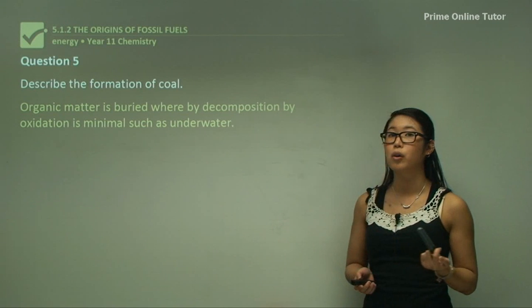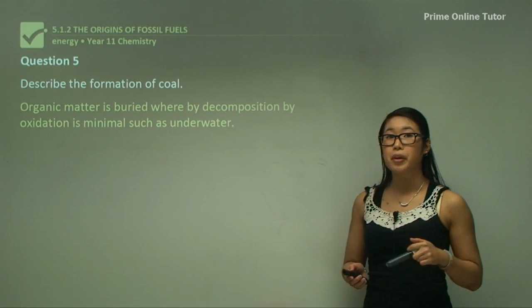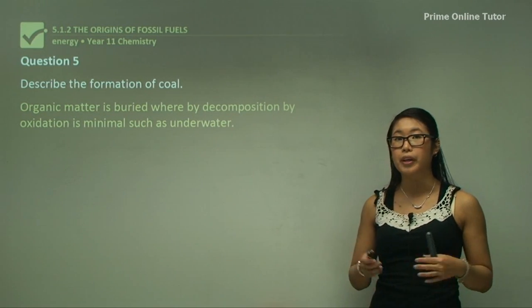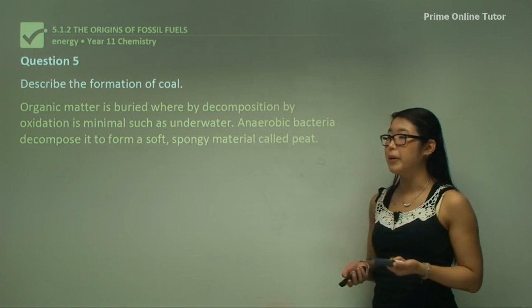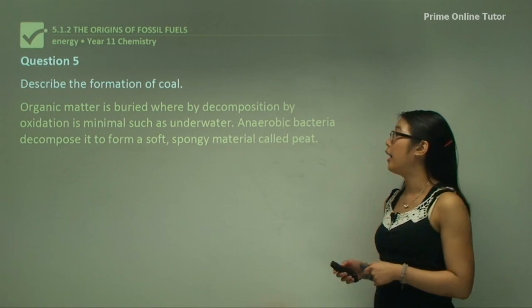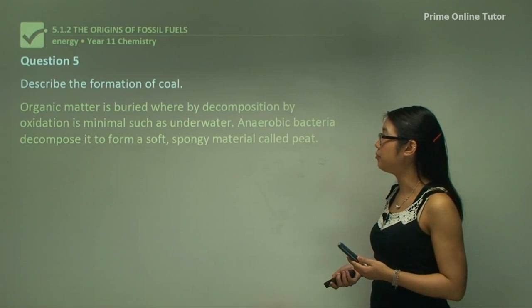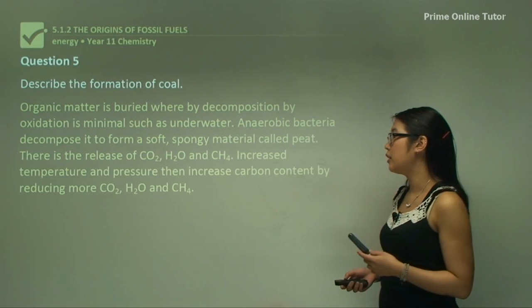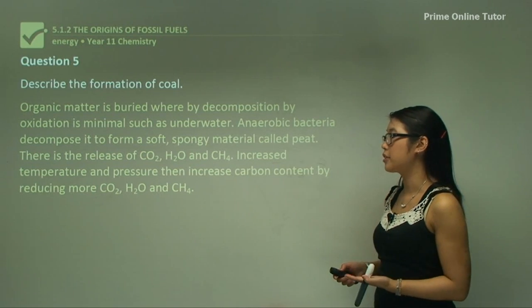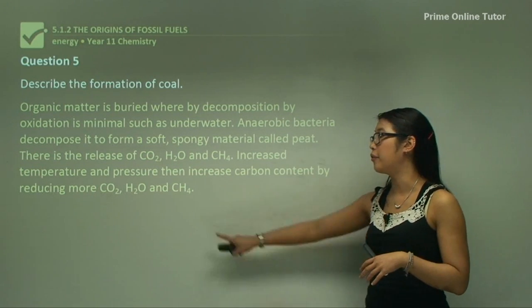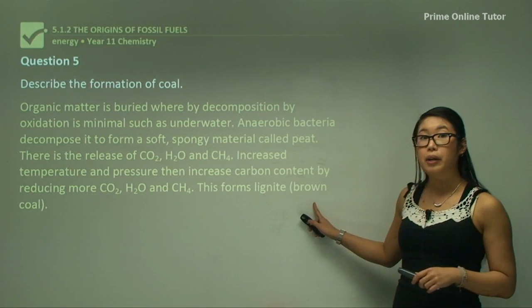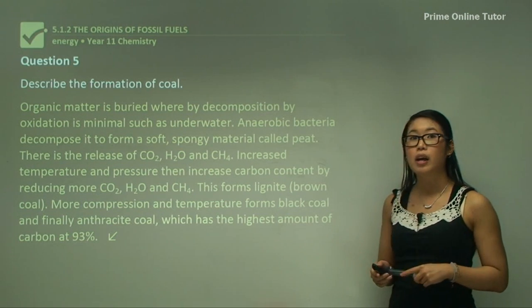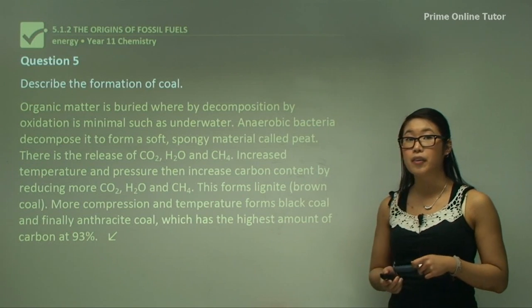Question five: describe the formation of coal. Organic matter is buried after it's died and decomposition by oxidation is minimal because it's underwater or buried. Anaerobic bacteria decompose it to form a soft spongy material called peat. There's a release of CO2, H2O and CH4. Increased temperature and pressure increases the carbon content by reducing more carbon dioxide, water and methane. This forms lignite or brown coal. If we continue with more pressure and temperature, we can eventually form black coal and then anthracite coal, which has the highest amount of carbon at 93%.